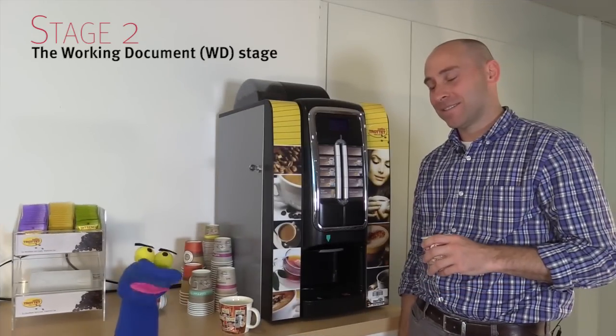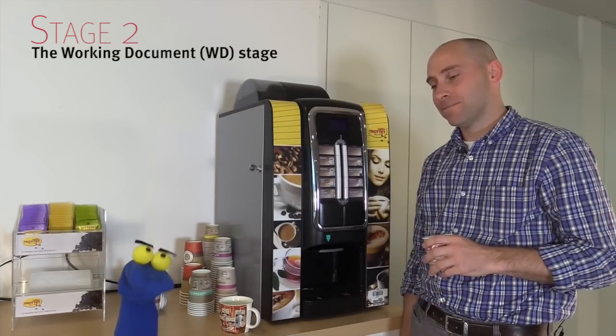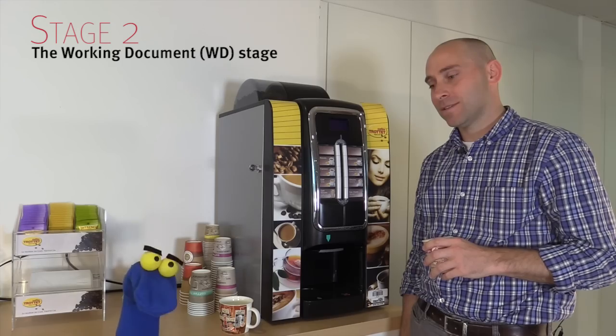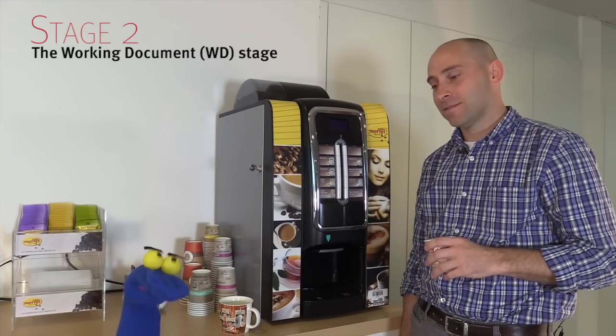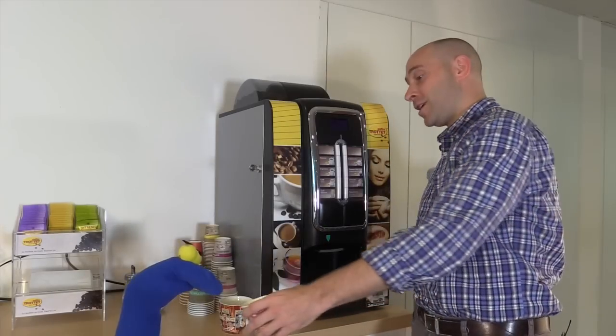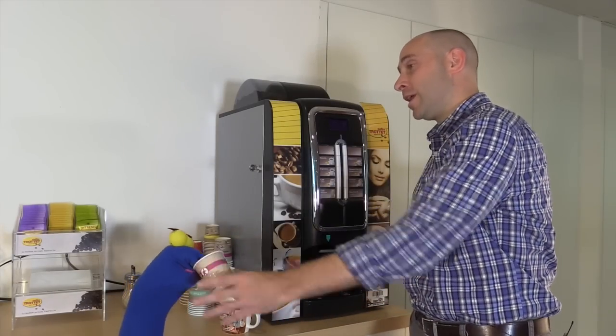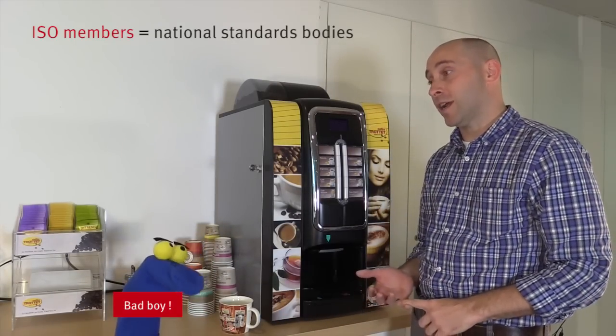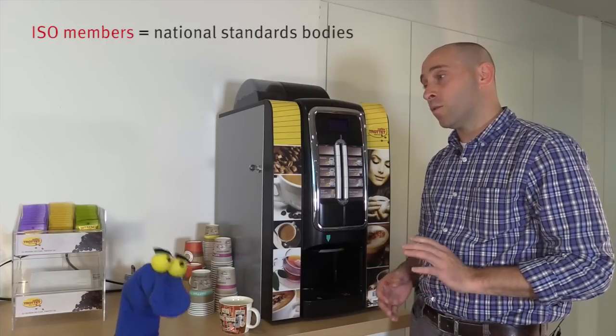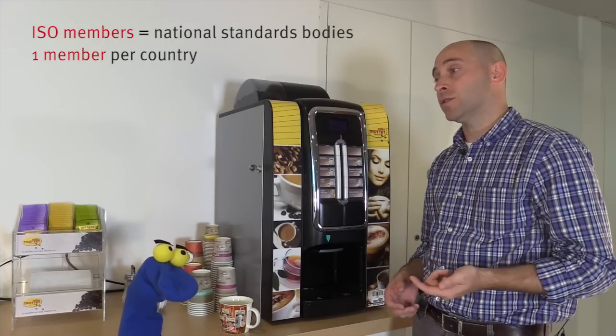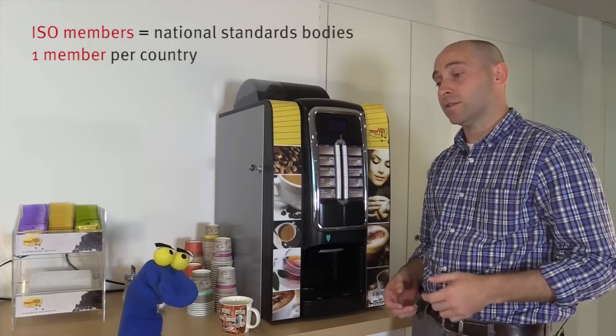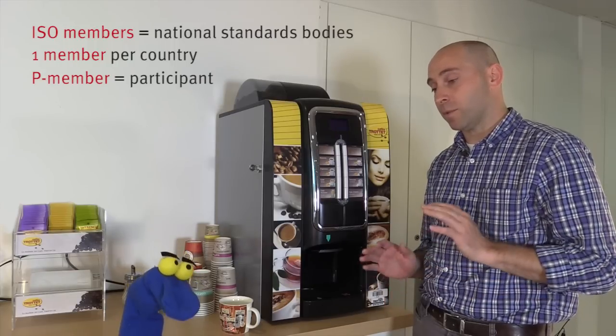So if a sock puppet making proposal is approved by an existing committee, what happens next? Can I help write it? I type well. Well that's great ISO, but as you know we have ISO members. These are the national standards bodies. There can only be one member per country and they can choose to actively participate in a committee and we call them P members. They're participants.